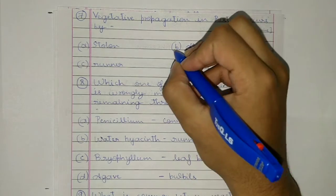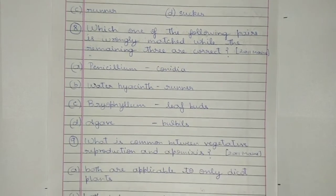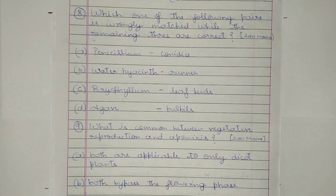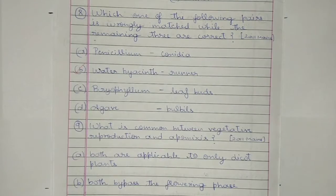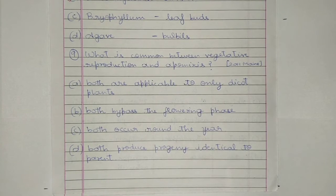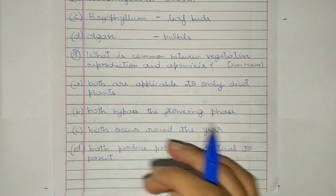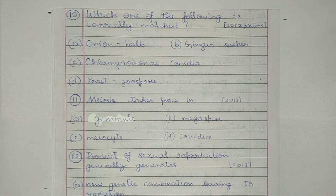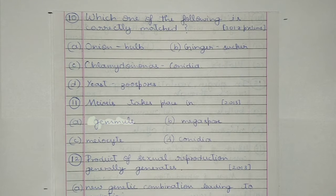Question 8. Which one of the following pairs is wrongly matched while the remaining three are correct? a) Penicillium – conidia, b) water hyacinth – runner, c) Bryophyllum – leaf buds, or d) Agave – bulbils. The wrong one is b. Question 9. What is common between vegetative reproduction and apomixis? a) Both applicable only to dicot plants, b) both bypass the flowering phase, c) both occur around the year, or d) both produce progeny identical to parent. The answer is d.